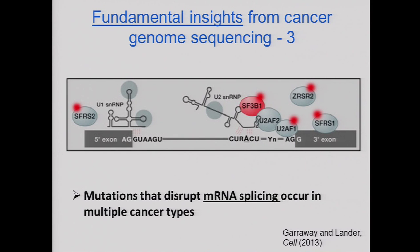A third insight, which really took the field by complete surprise — and this is only about two years old — was the importance of mutations in mRNA splicing. Of course we all know that mRNA splicing is important to regulate gene expression post-transcriptionally, but I don't think anybody had realized how important somatic mutations in splicing would become.